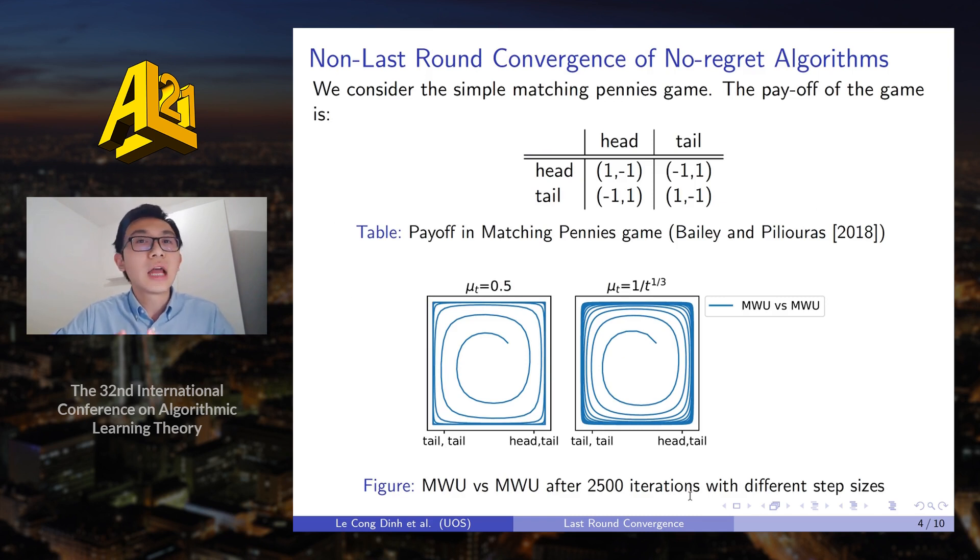So it's natural to study the situation when both players use no regret algorithms. As we can see here in a simple matching pennies game with the matrix of the game symmetric, it can be easily seen that the unique Nash equilibrium of the game is 0.5, 0.5.